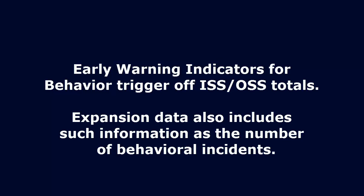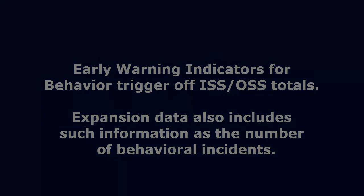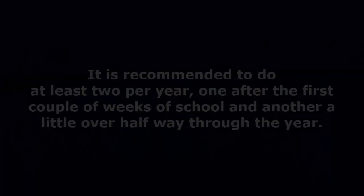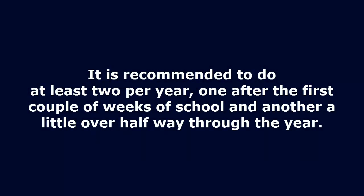Early Warning Indicators for behavior trigger off in-school and out-of-school suspension totals. Expansion data also includes information such as the number of behavioral incidents. An additional data point schools may elect to include is early warning system behavior screenings. The most recent two screenings provide expansion data, and for elementary schools, also serve as triggers for early warning indicators. It is recommended to do at least two screenings per year — one after the first couple of weeks of school and another a little over halfway through the year.